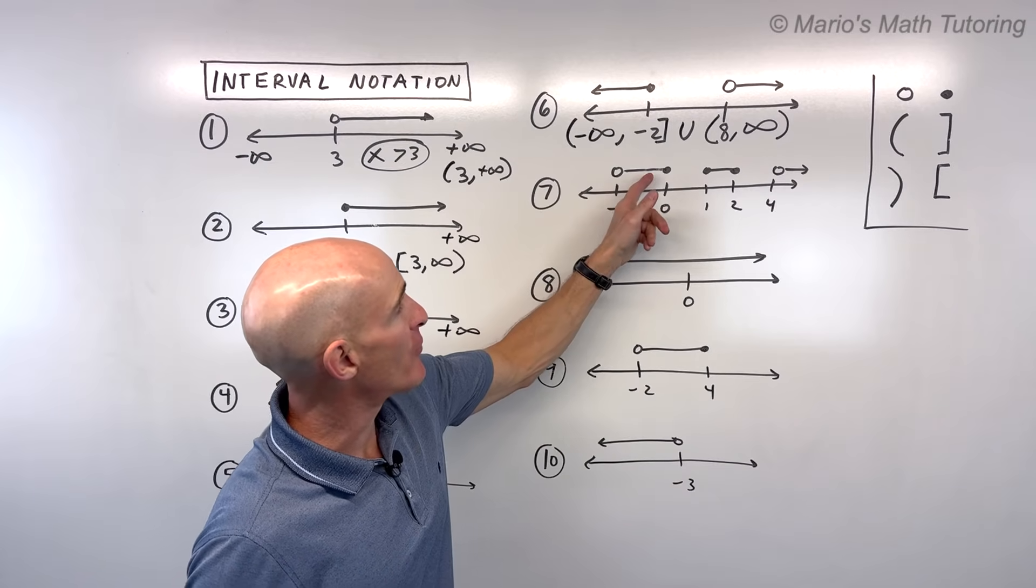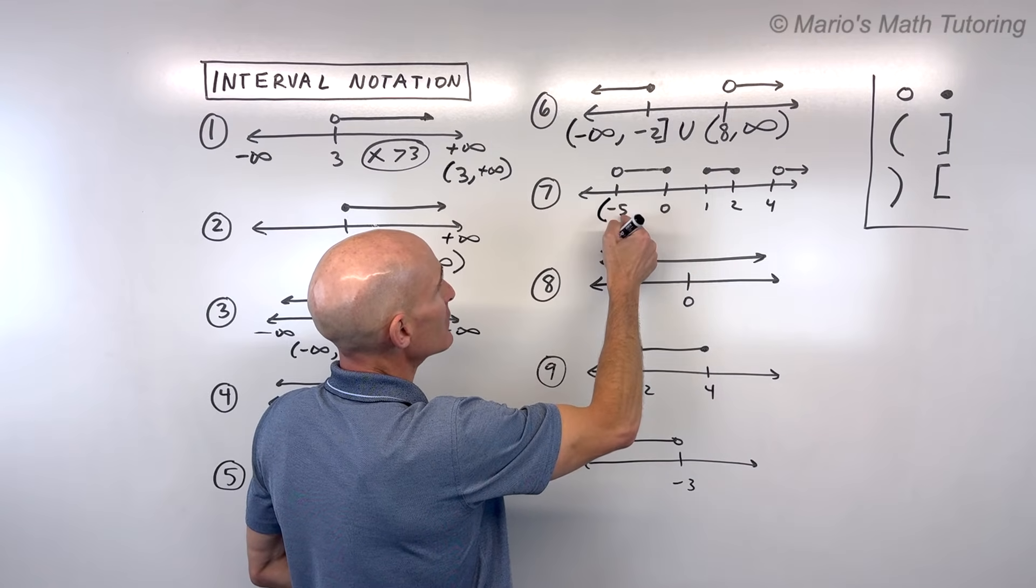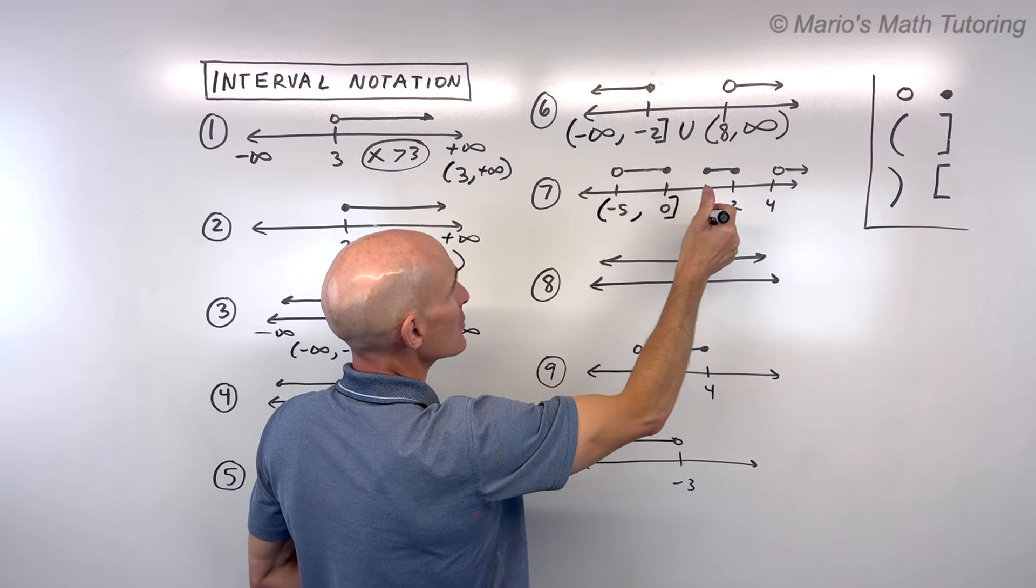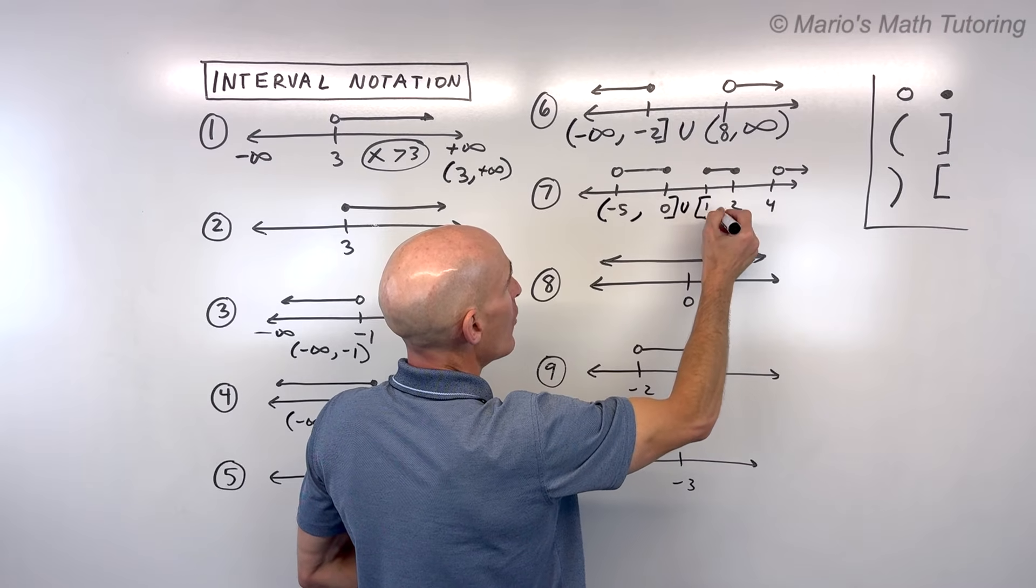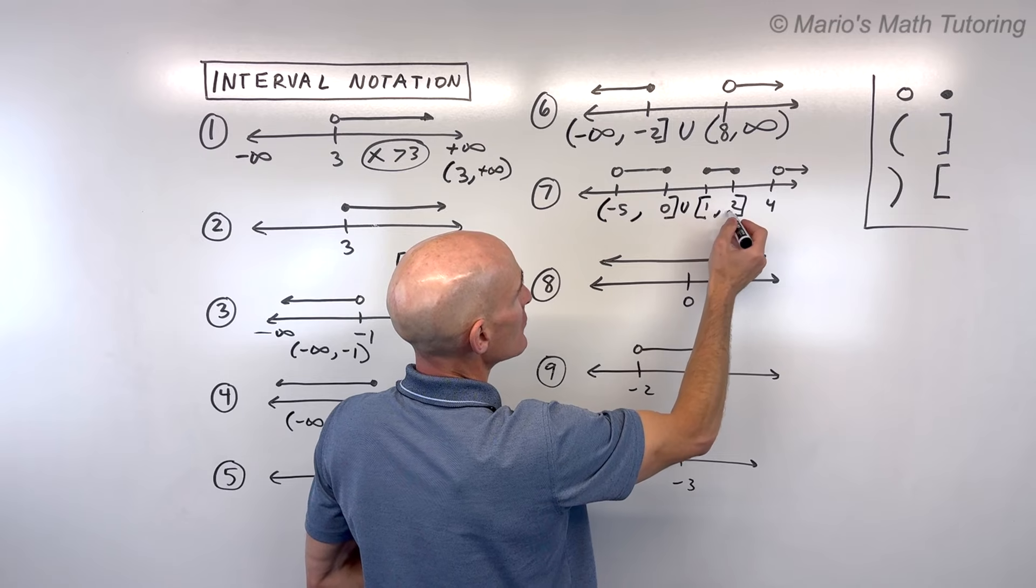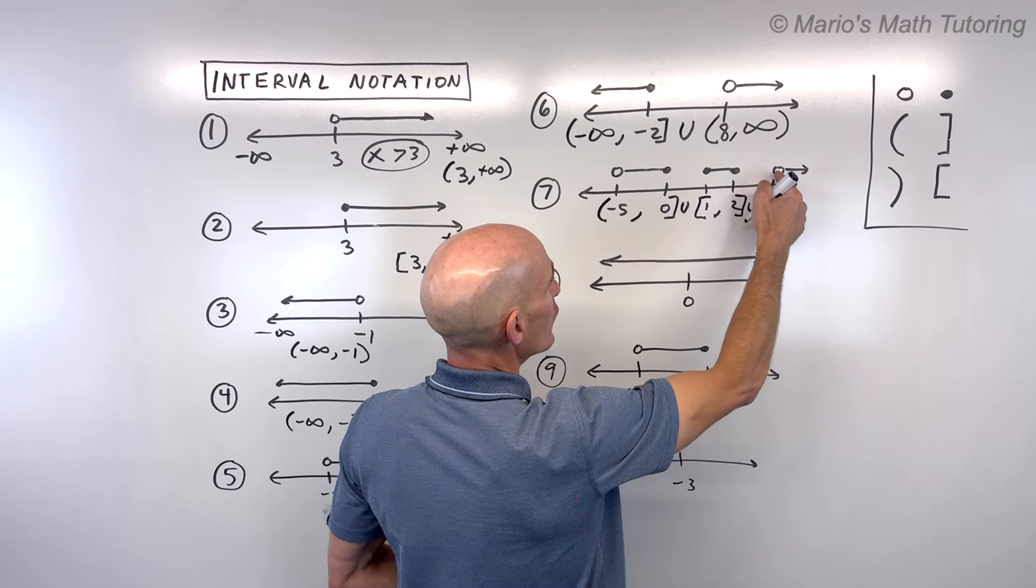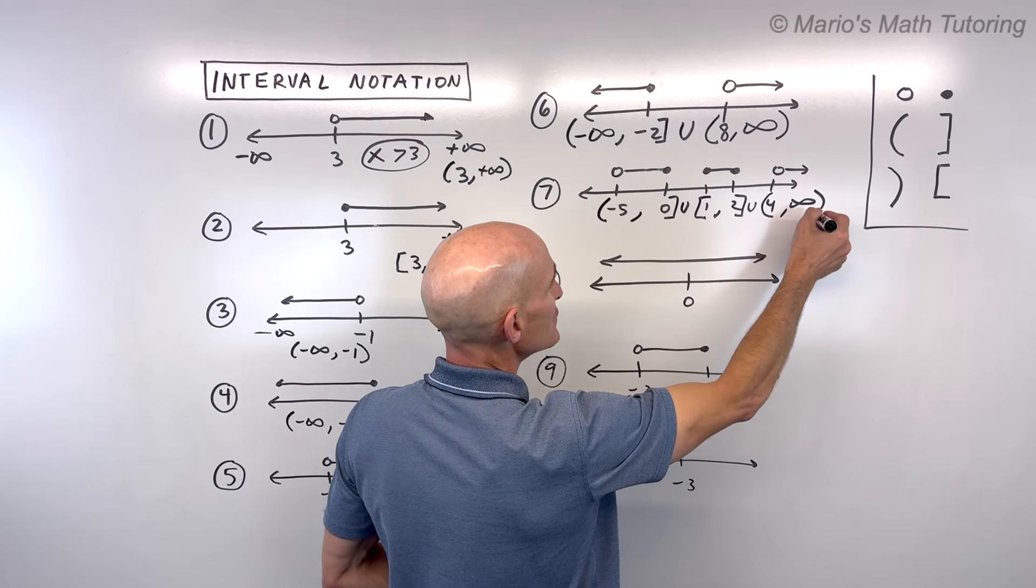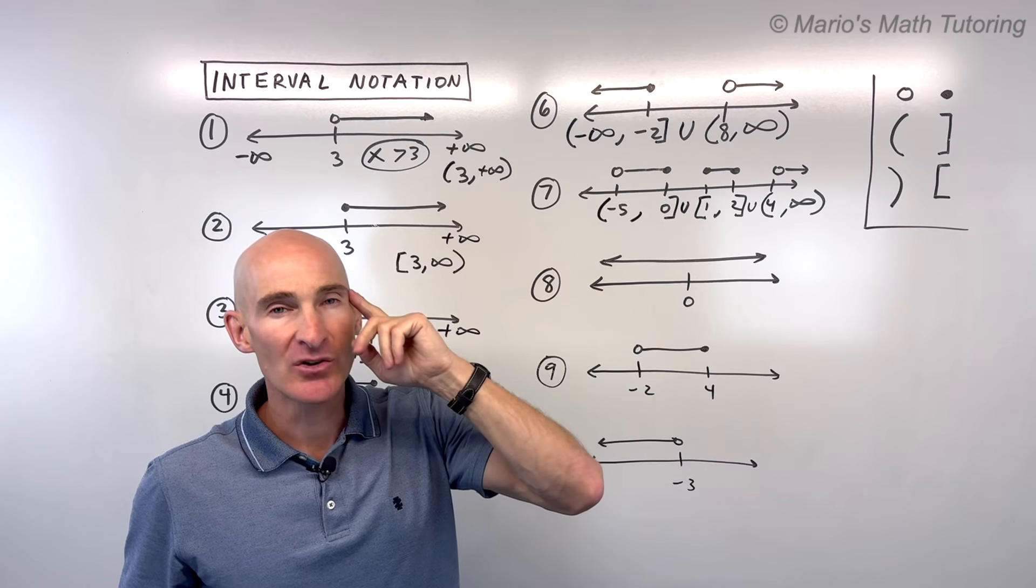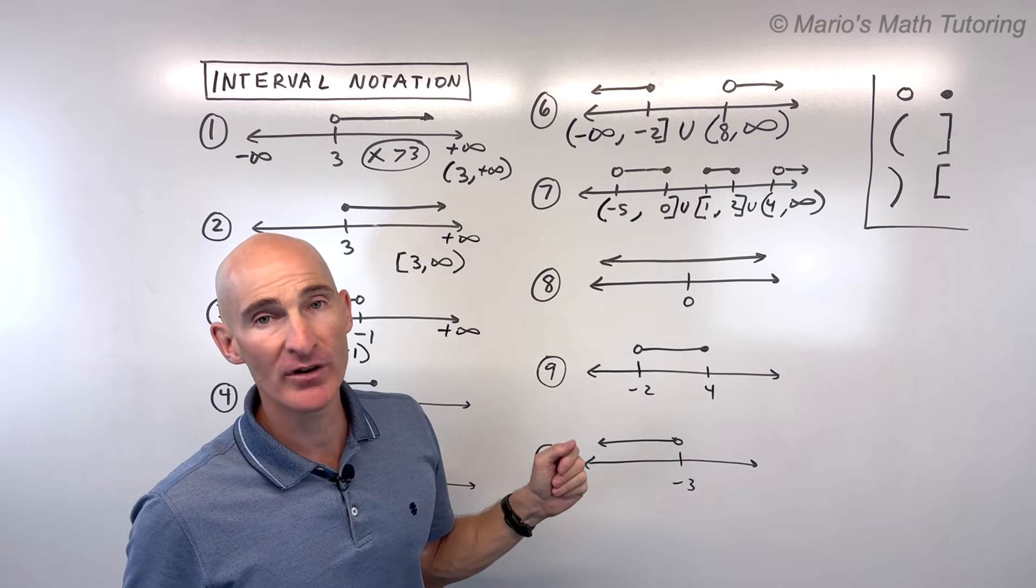For number 7, we actually have three intervals. So in this case, we say parenthesis negative 5 comma zero bracket, because it includes zero, union bracket 1, includes 1, to 2 bracket, it includes 2. So this means all the numbers from 1 to 2, inclusive. Union, doesn't include 4, so parenthesis, all the way to infinity, can never reach infinity, parenthesis. See how I'm going from left to right? That's the key. A lot of times you'll get an answer and you'll just think, how do I do this? Graph it out. That'll help you to write the intervals.